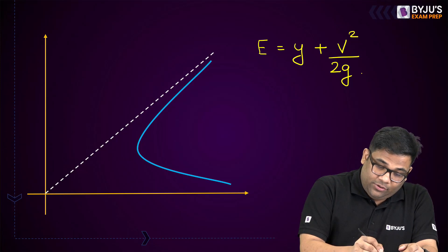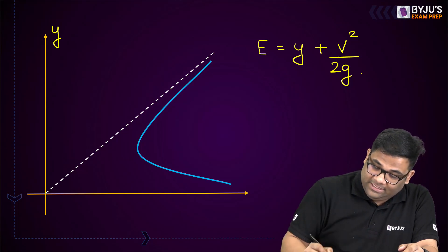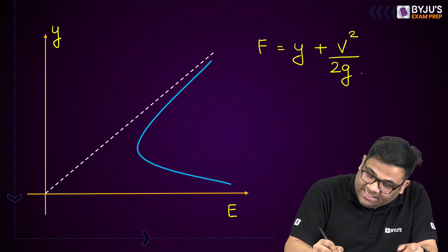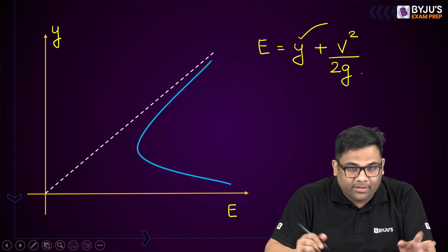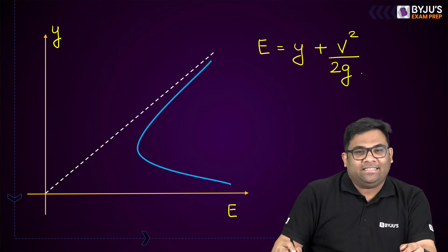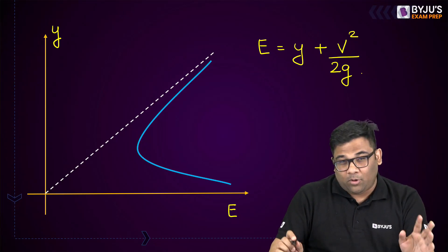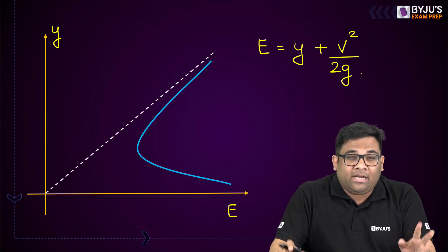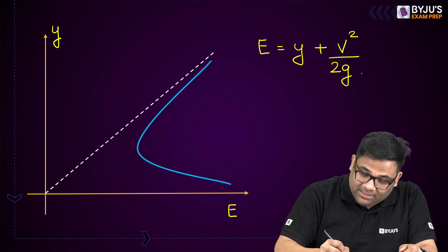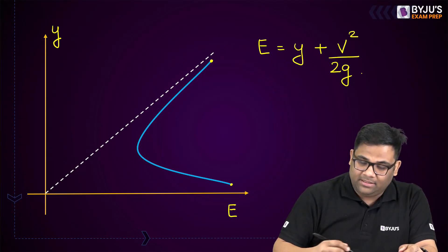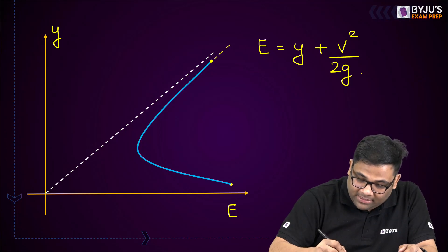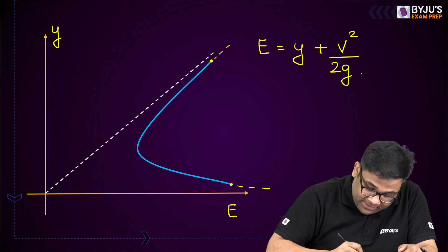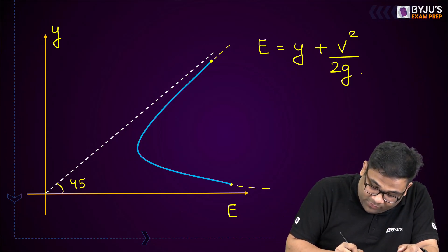If you are plotting Y versus specific energy, since specific energy E is a function of Y — the depth of flow — you get a plot like this. This blue plot starts from here and continues like this.